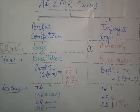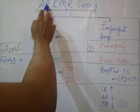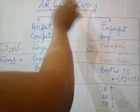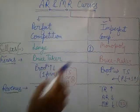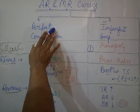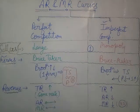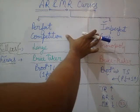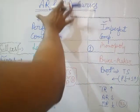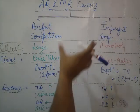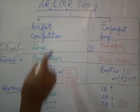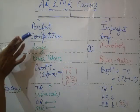Hello friends, welcome to my YouTube channel Insight Study. In this class we will discuss two things: first, AR (Average Revenue) and second, MR (Marginal Revenue), along with curves related to AR and MR. Before proceeding further, we need to understand two situations: first, perfect competition, and second, imperfect competition, and how AR and MR curves behave in these two situations.